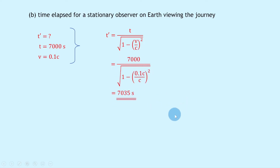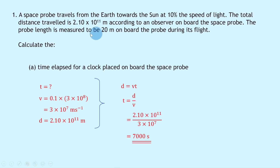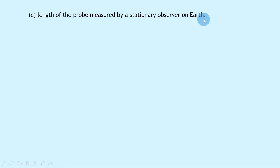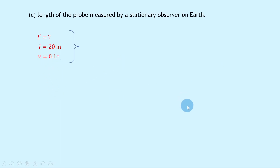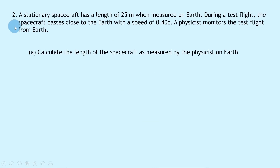Part C says to calculate the length of the probe measured by a stationary observer on Earth. The probe length of 20 meters measured on board is in the frame of reference of the event, so that is the proper length l. The length measured by the stationary observer on Earth is the relativistic or contracted length l'. We know l = 20 meters and v = 0.1c. Using l' = l times the square root of (1 minus v over c squared), substituting gives 20 times the square root of (1 minus 0.1 squared), which gives an answer of 19.9 meters.